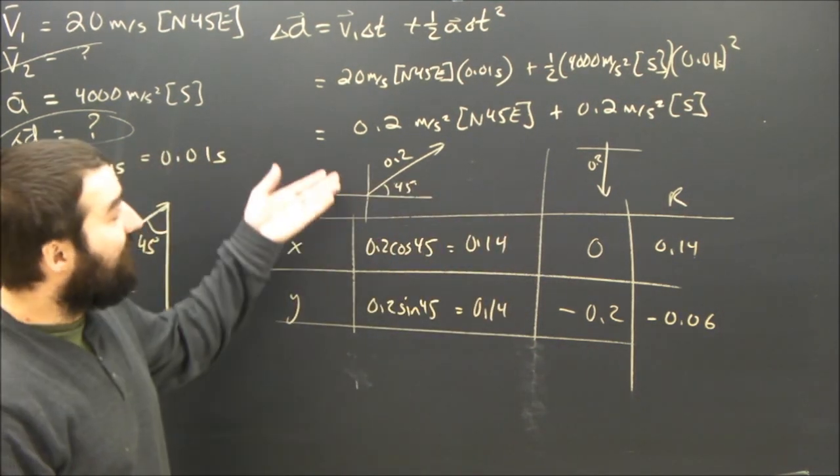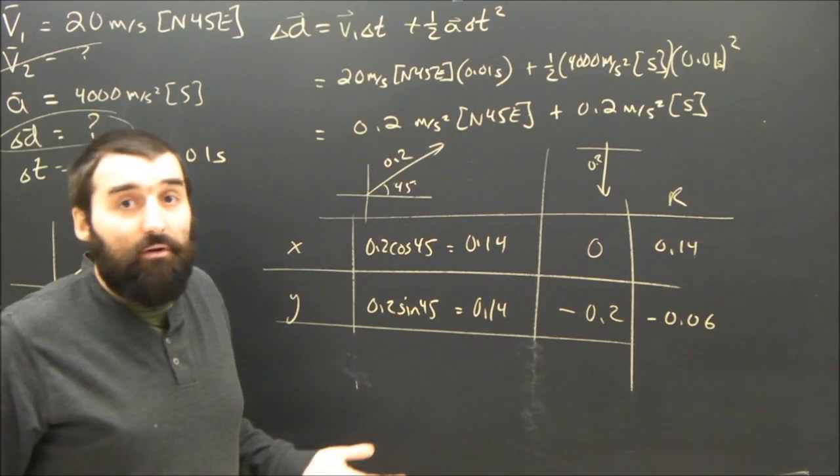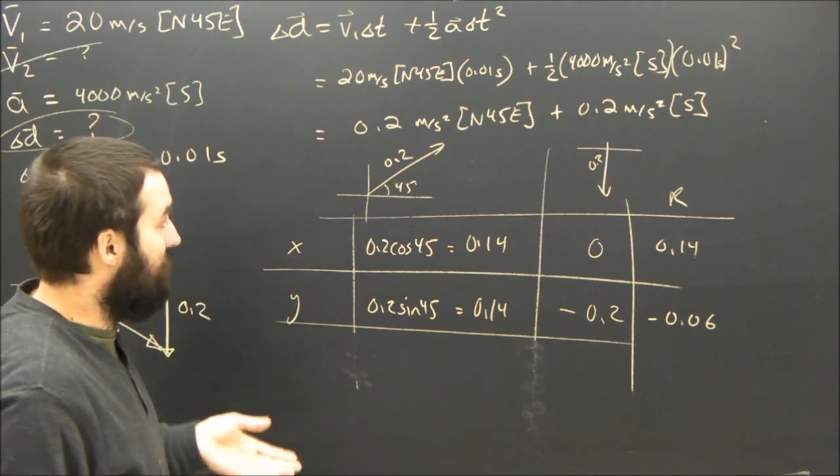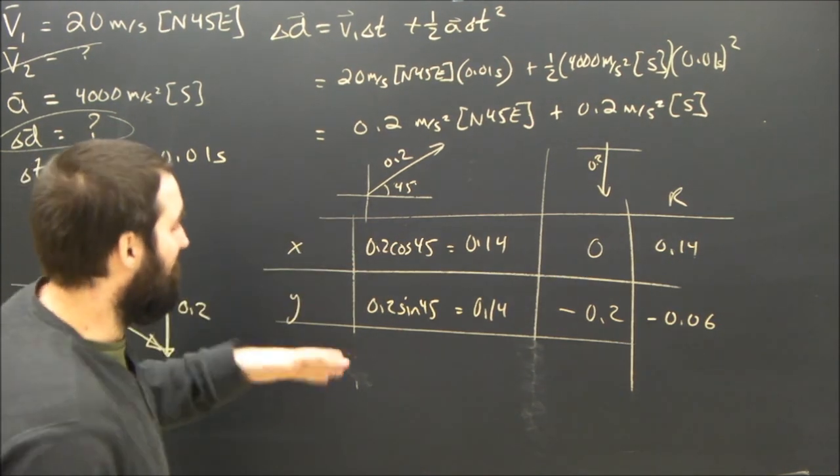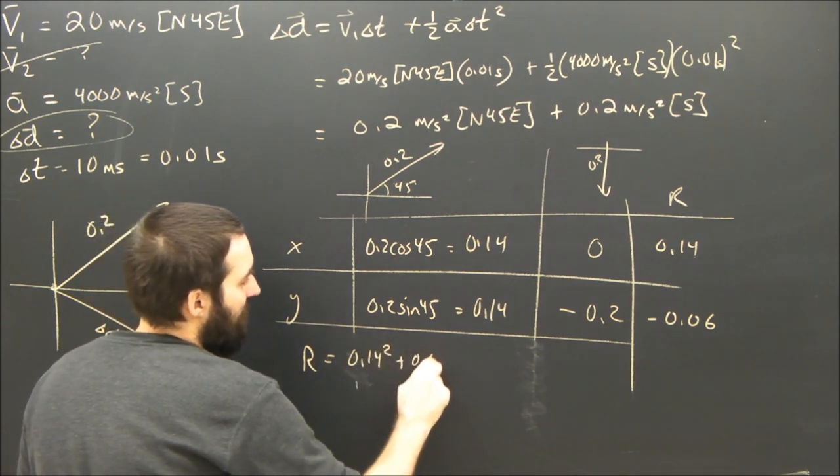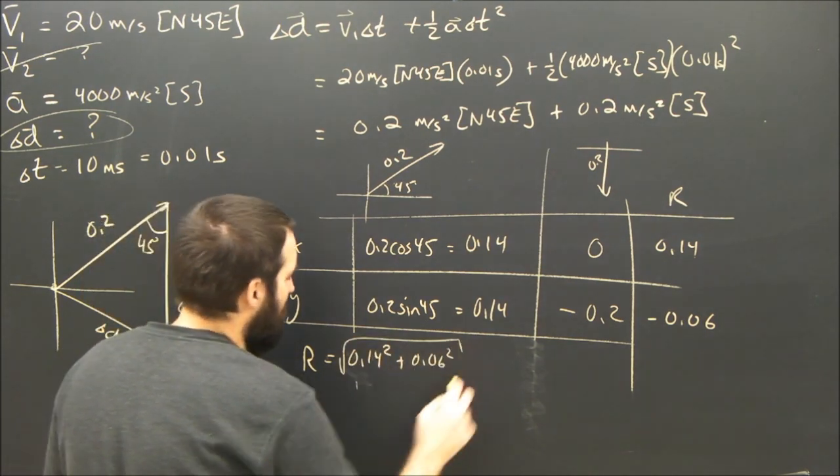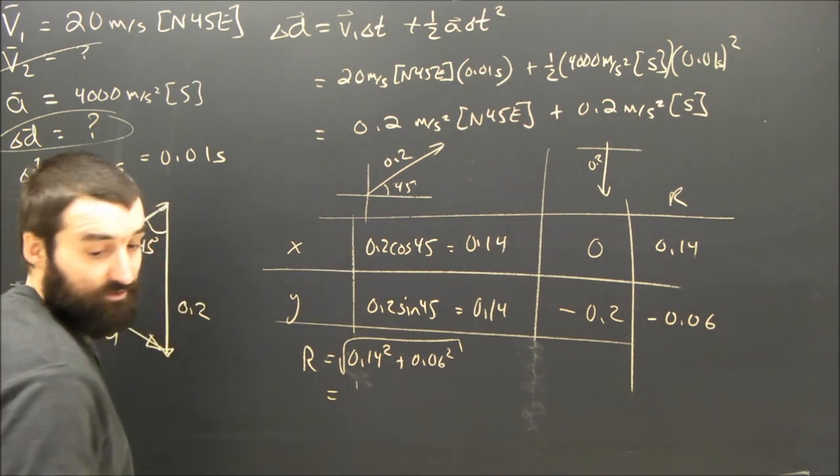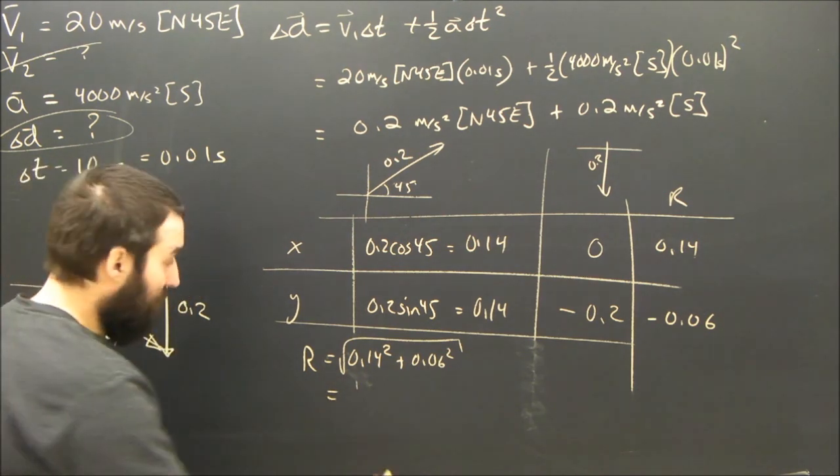All I'm doing now is adding these two vectors using the component method that we learned in school. So my x components, my y components, r is 0.14 squared plus 0.06 squared, square rooted, which turns out to be about 0.21.